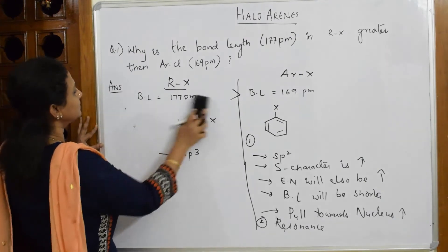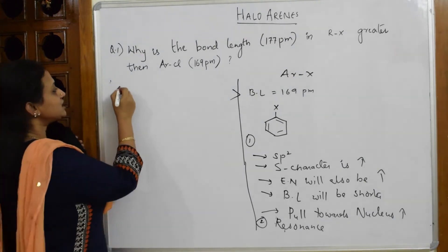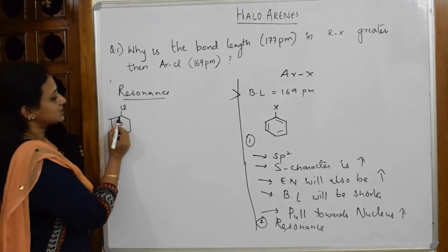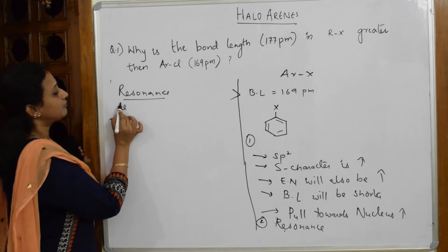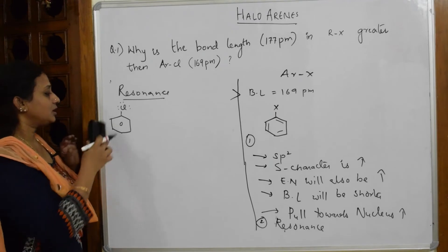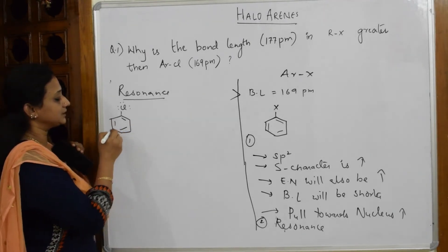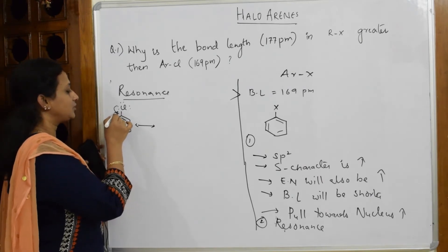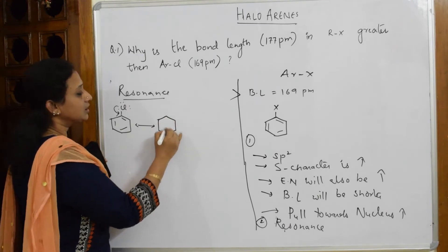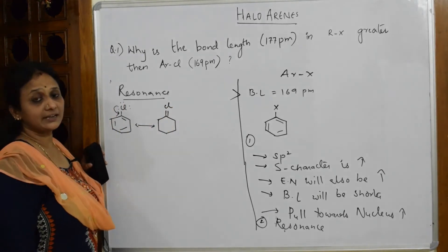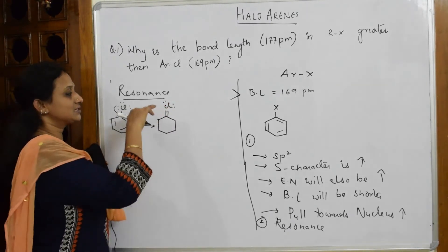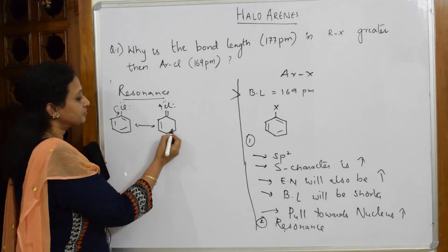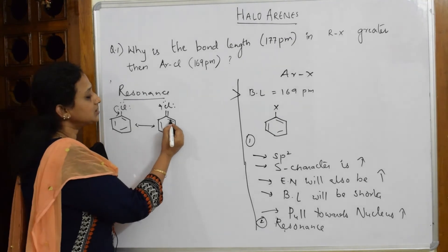Now I will explain the resonance concept for chlorobenzene. I take benzene with Cl. Counting the electrons: 1, 2, 3, 4, 5, 6, 7, 8 — octet is satisfied. We know benzene has alternate pi bonds. A pair of electrons from chlorine is donated into the ring. When a pair of electrons is donated, chlorine attains a partial double bond character. The ring carbon that loses electrons attains a positive charge, and the adjacent double bond immediately shifts because two double bonds cannot exist together.